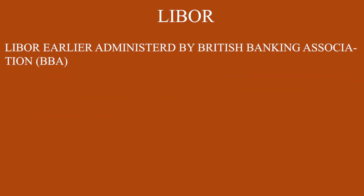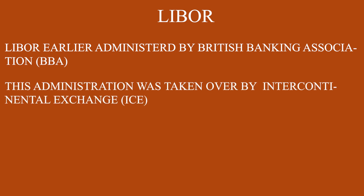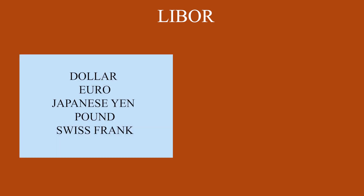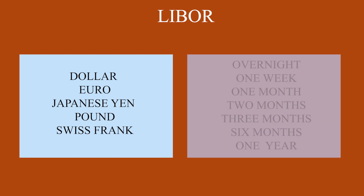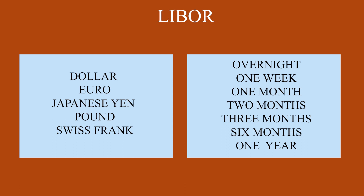LIBOR was earlier administered by the British Banking Association, or BBA. Subsequently, this administration was taken over by the Intercontinental Exchange, that is ICE. LIBOR is published for the following maturity periods: one week, one month, two months, three months, six months, and one year.